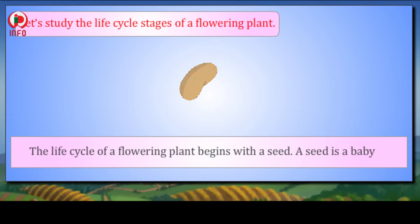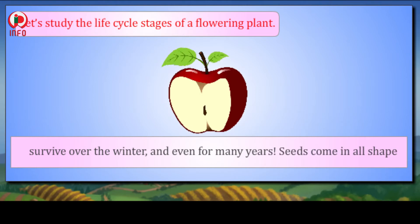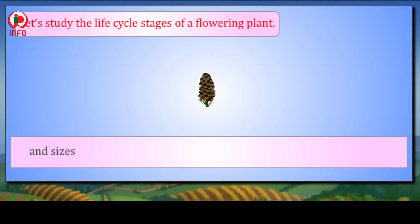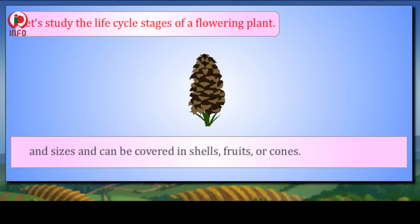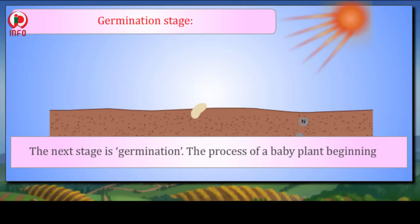Let's study the life cycle stages of a flowering plant. The life cycle of a flowering plant begins with a seed. A seed is a baby plant. It contains nutrition necessary to start the life of a plant. Seeds can survive over the winter and even for many years. Seeds come in all shapes and sizes and can be covered in shells, fruits, or cones.